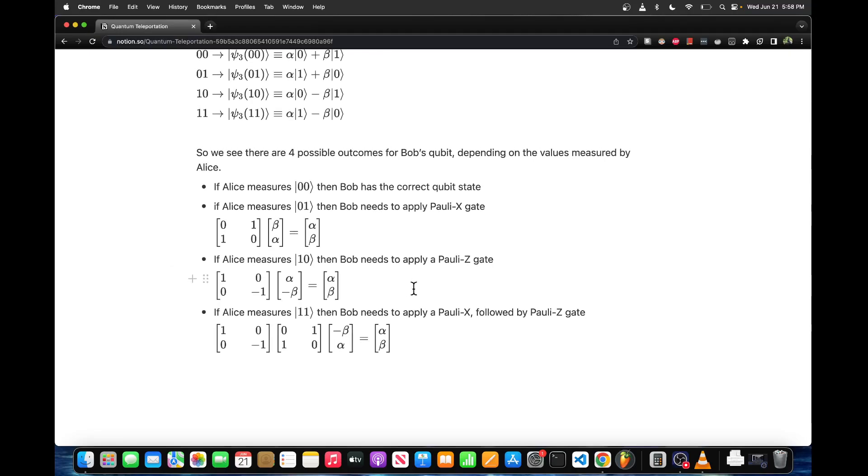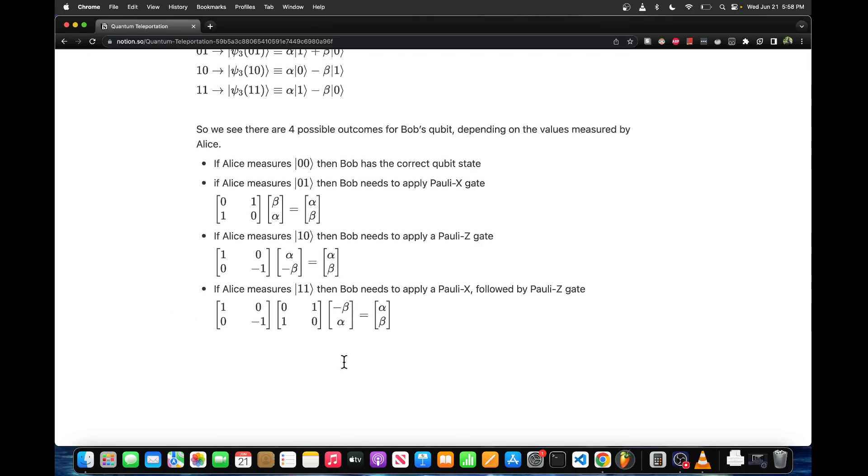If Alice measures 1,0, Bob needs to apply a Pauli Z gate which negates the beta coefficient. And if Alice measures 1,1 then Bob needs to apply a Pauli X followed by a Pauli Z, and that switches the coefficients and then negates the beta. So yeah that's pretty much it, that's the quantum teleportation circuit.